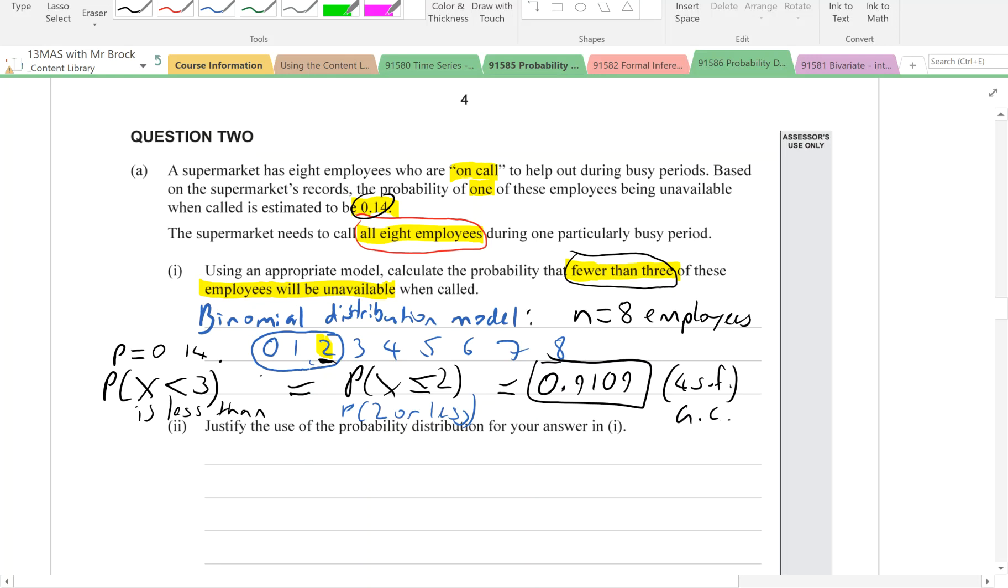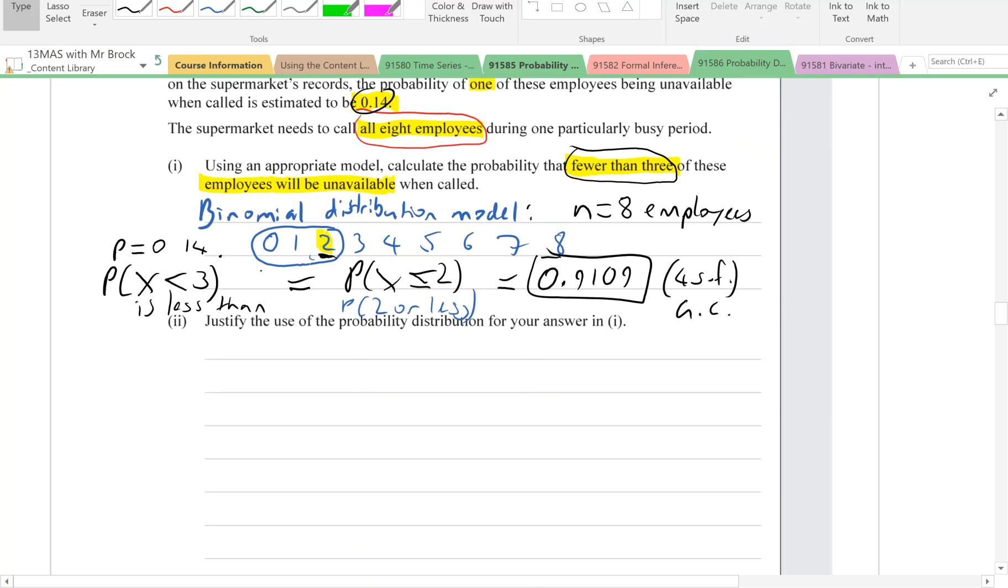Now, justify the use of the probability distribution for your answer in part one. That just means, how does the situation satisfy the requirements or the conditions needed to apply binomial distribution model?